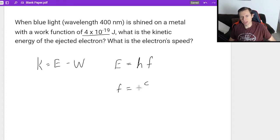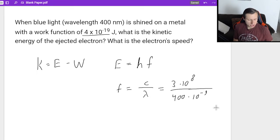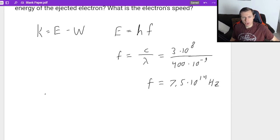f equals c over lambda, where c is the speed of light, 3 times 10 to the eighth, divided by the wavelength, which is 400 nanometers. Remember, nanometers is 10 to the minus ninth. So I take 3 times 10 to the eighth divided by 400 times 10 to the minus ninth, and I'll get a frequency of 7.5 times 10 to the 14th, and the units are hertz. And now I'm going to plug that into the energy equation.